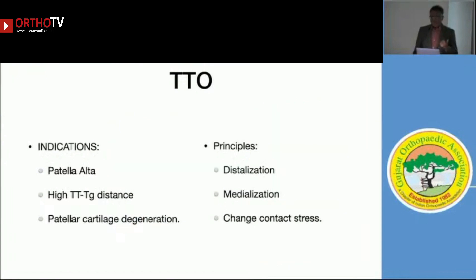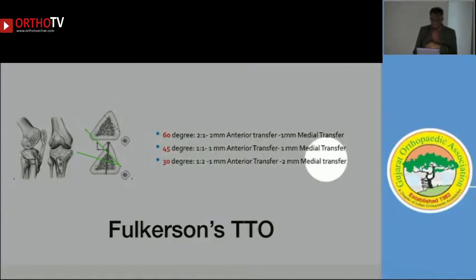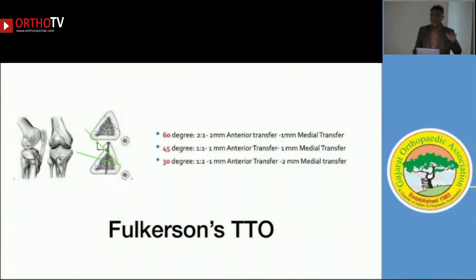The third element is distal realignment — tibial tubercle osteotomy (TTO). Indications include patella alta (distalization), elevated TT-TG distance (medialization), and patella cartilage degeneration (contact stress redistribution). The Fulkerson-type TTO allows changing the osteotomy angle: a 60-degree vertical cut produces more anterior transfer — better for cartilage stress; a 30-degree oblique cut produces more medial transfer — better for correcting the TT-TG distance. This is how you plan your TTO accordingly.